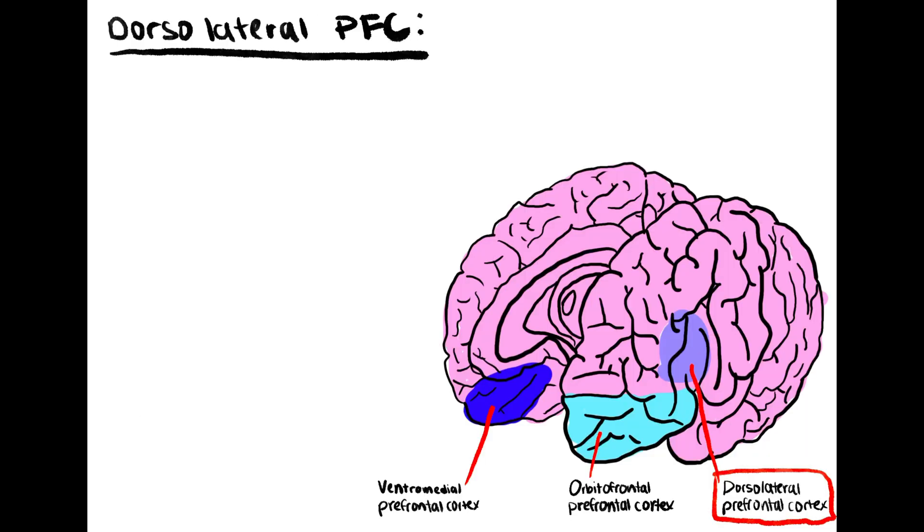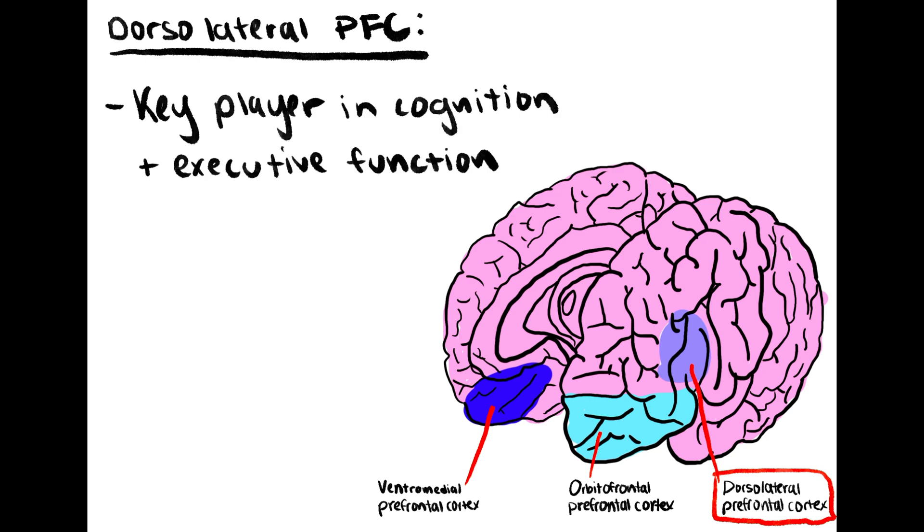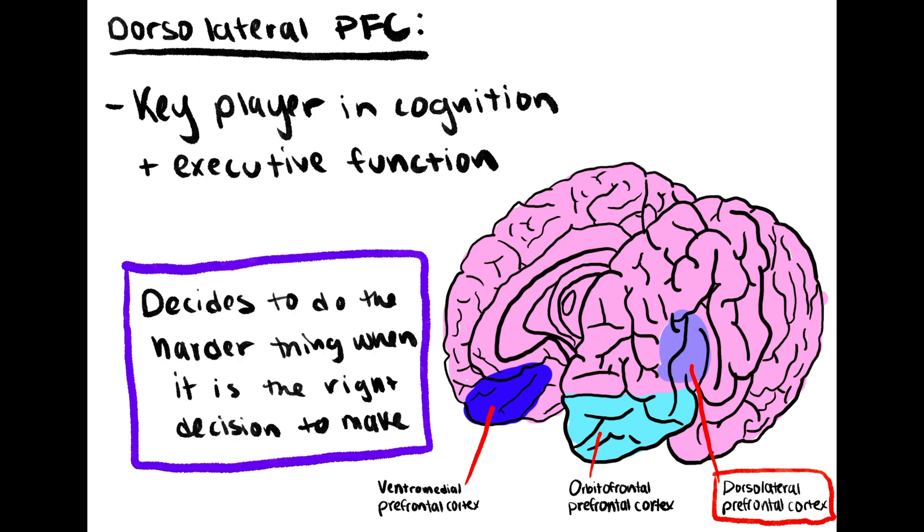The dorsolateral prefrontal cortex is a key player in cognition and executive function. It's the one deciding to do the harder thing when it's the right decision to make.